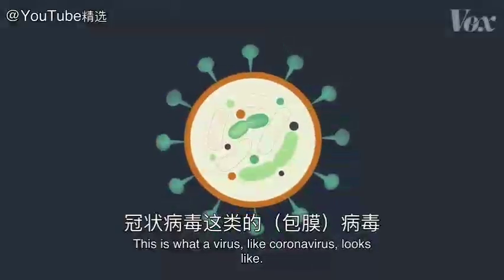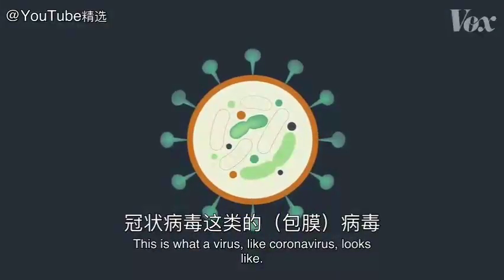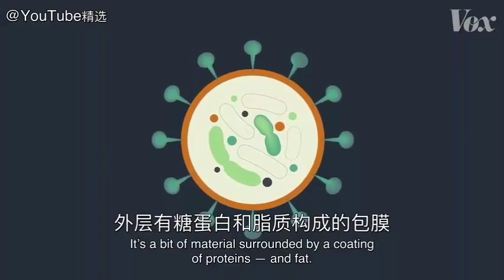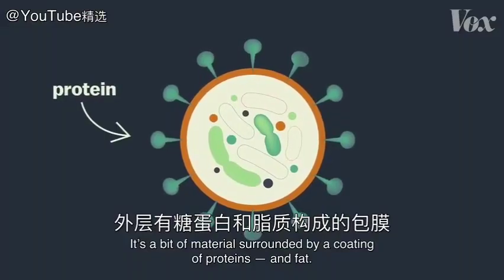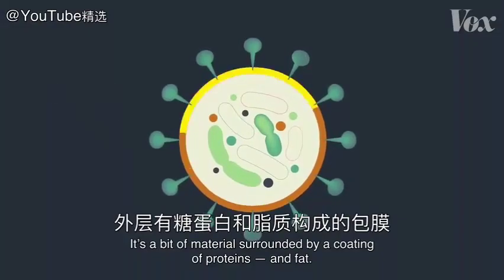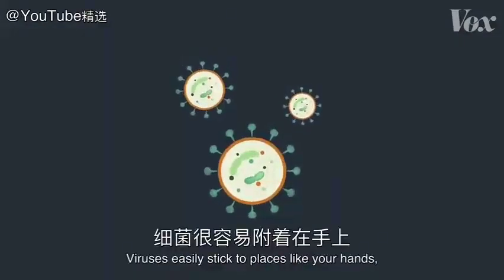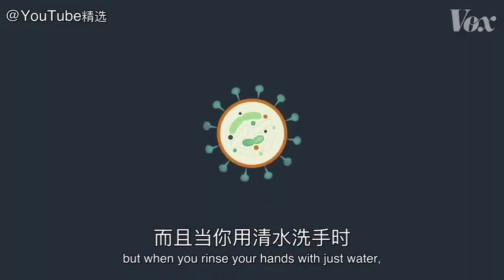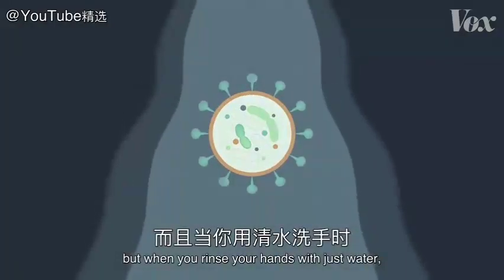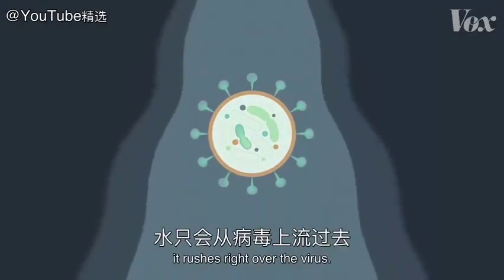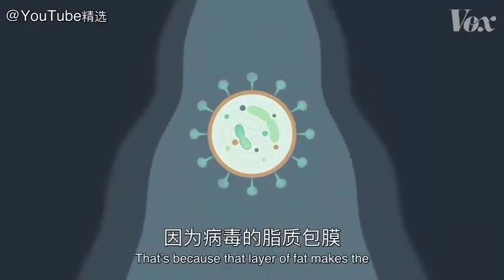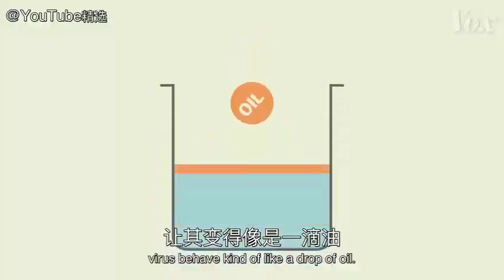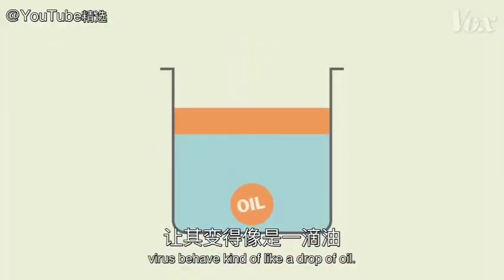This is what a virus, like coronavirus, looks like. It's a bit of material surrounded by a coating of proteins and fat. Viruses easily stick to places like your hands, but when you rinse your hands with just water, it rushes right over the virus. That's because that layer of fat makes the virus behave kind of like a drop of oil.